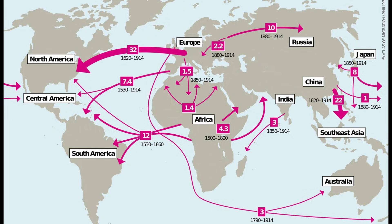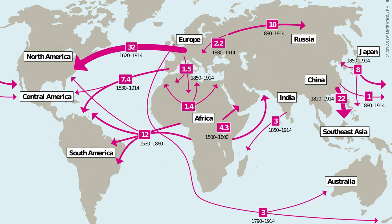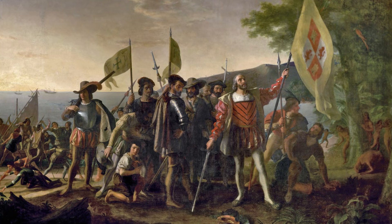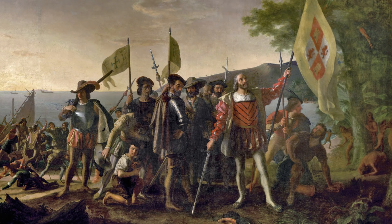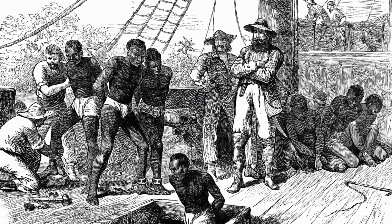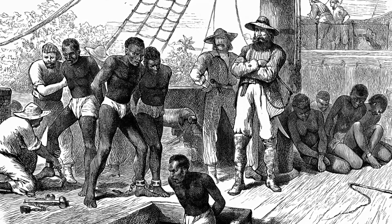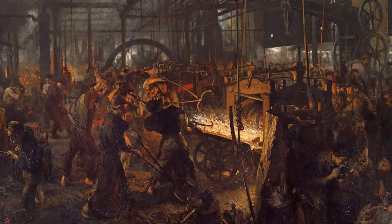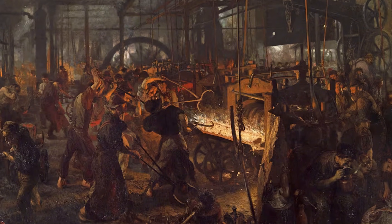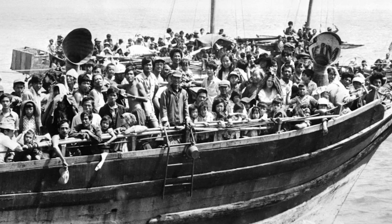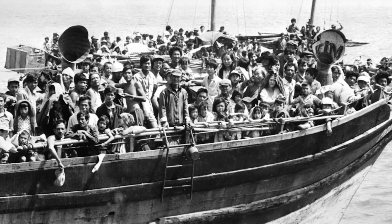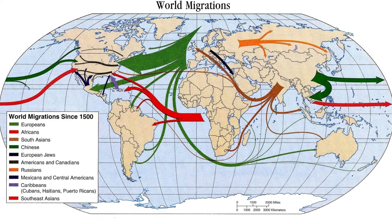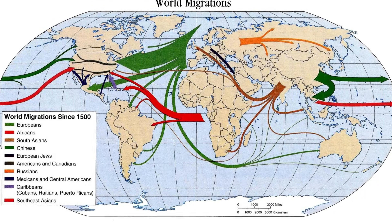Global Migration. The global migration period refers to the large-scale movement of people across the world, from roughly the 1500s to the present. This era began with European overseas expansion and the linking of continents through trade, colonization, and exploration. It includes both voluntary migrations, such as settlers and laborers seeking opportunity, and forced migrations, most notably the transatlantic slave trade. Later phases were shaped by industrialization, which drove mass movement from rural areas to cities and from Europe and Asia to the Americas and Oceania. In the modern era, global migration has been influenced by war, political instability, economic inequality, and environmental change. This period is significant because it created the modern global population distribution, intensified cultural exchange, and connected societies worldwide in unprecedented ways, making human movement a defining feature of the contemporary world.